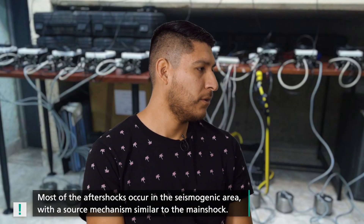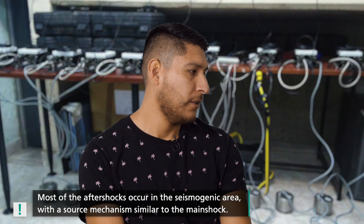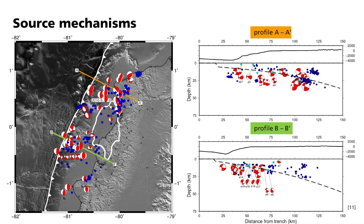Some of the source mechanisms occurred within the slab, and most of the aftershocks show fault planes parallel to the plate interface with a dip between 15 to 20 degrees — the same orientation as the rupture plane of the mainshock. However, we also found some extensional and strike-slip events. We propose that extensional events can be related to the subduction of seamounts, which can generate normal faulting. For strike-slip seismicity, this could be associated with the friction caused by the subduction of a massive bathymetric feature, such as the Carnegie Ridge coming from the oceanic crust.